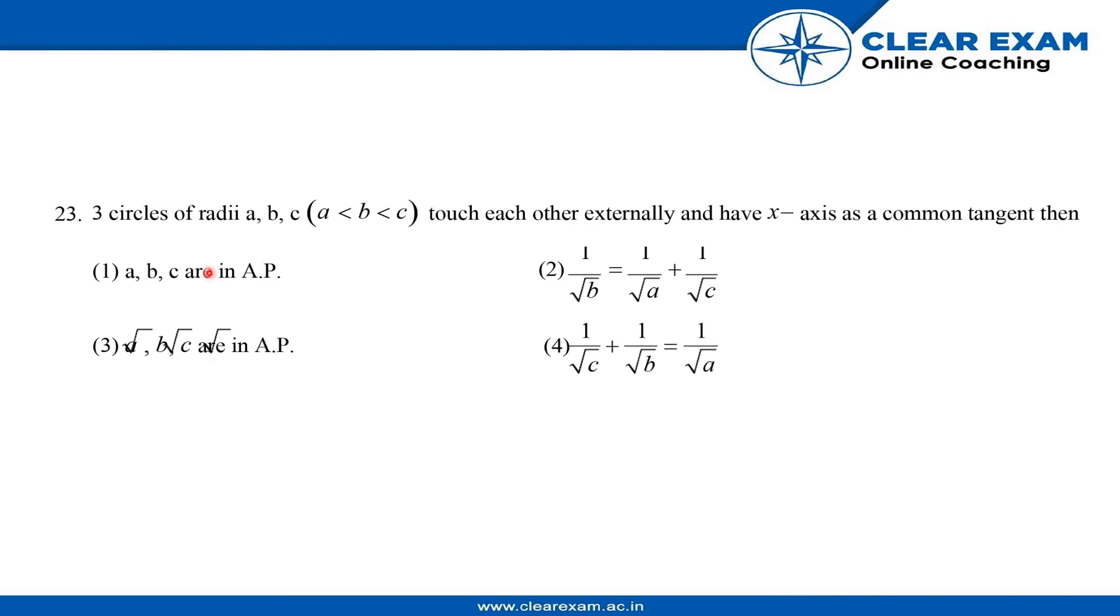Then ABC are in AP, 1 by root B equals 1 by root A plus 1 by root C, and root A, root B, and root C are in AP, or 1 by root C plus 1 by root B equals 1 by root A.